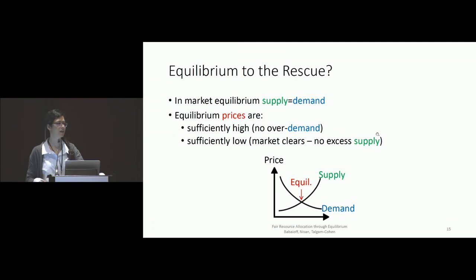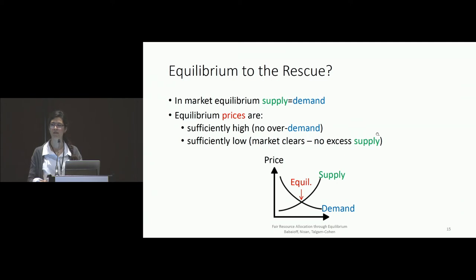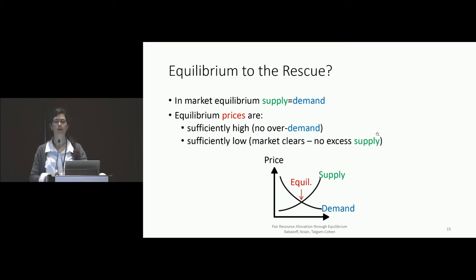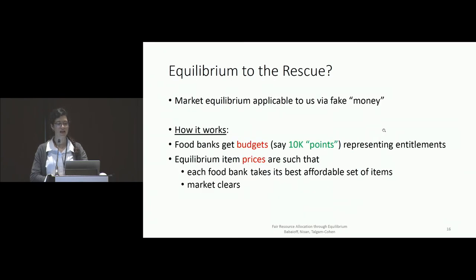This is a great moment to recall what economic equilibrium is: in a market, market forces drive prices to clear the market — supply equals demand. The equilibrium prices are just right: sufficiently high so that not everybody wants to buy everything and there's no over-demand, and sufficiently low so that the market clears and there is no waste. Even though we're in a setting without money, this is applicable because you can use fake money. This is very similar to what is actually used to allocate food donations to food banks in the U.S.